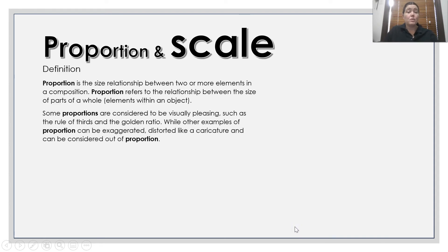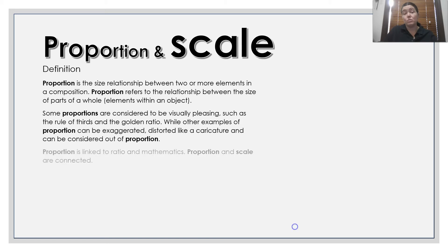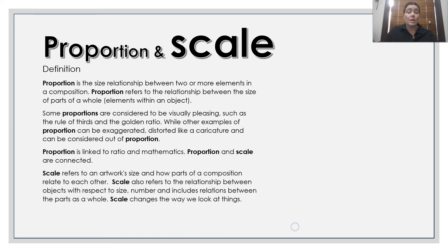Proportion and scale. Proportion is the size relationship between two or more elements of composition — it refers to the relationship between the size of the parts of a whole, the elements within the object. Some proportions are considered to be visually pleasing, such as the rule of thirds or the golden ratio. While other examples of proportion can be exaggerated or distorted, like a caricature, and can be considered out of proportion. Proportion is linked to ratio and mathematics.